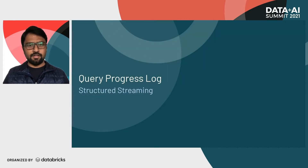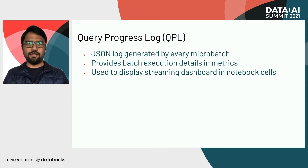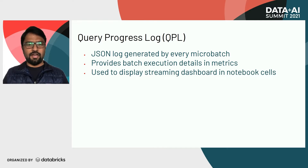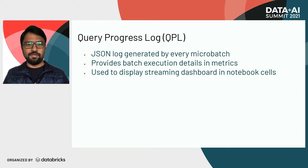Let's start with query progress logs. A query progress log is a JSON log which Spark structured streaming generates after completion of every micro batch. These are a bunch of metrics that give execution details about your structured streaming job. These are internal metrics that Databricks also uses to display insights from your structured streaming queries when you run streaming jobs inside Databricks notebooks.